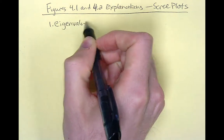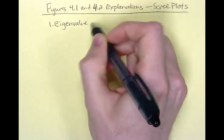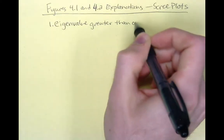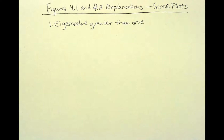So eigenvalue greater than one. So what does that mean? Well, since an eigenvalue of one indicates that we are accounting for only as much variance as is contained in one variable, a factor corresponding to less than one variable does not seem reasonable. So any factor with an eigenvalue less than one is not included in the analysis.